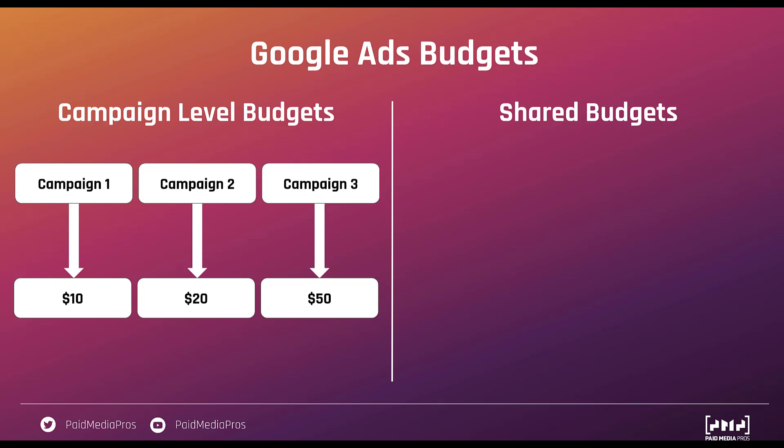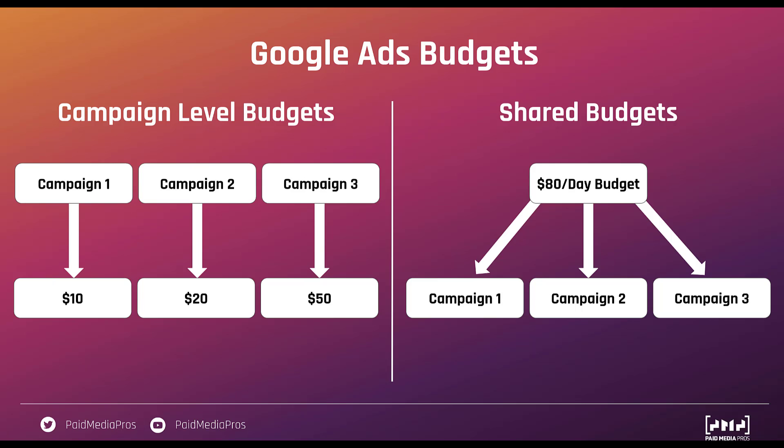If we were to make a shared budget for these three campaigns, we would effectively flip the relationship between the budget and the campaigns, and the budget would be shared. We'd start with an $80 a day shared budget — the total of the three campaigns — and that amount would be allocated across each campaign daily so the combined spend is no more than $80. But the distribution could be any weight across campaigns one, two, and three. It's largely a first-come, first-served basis.